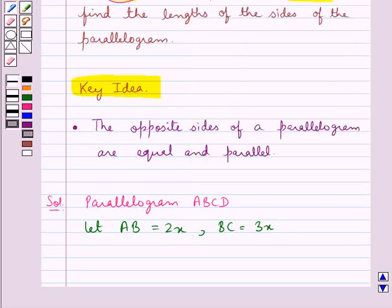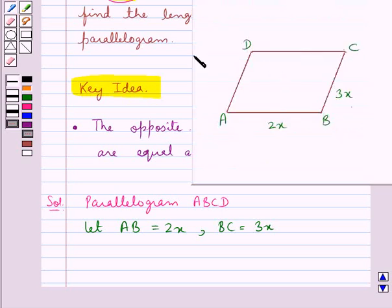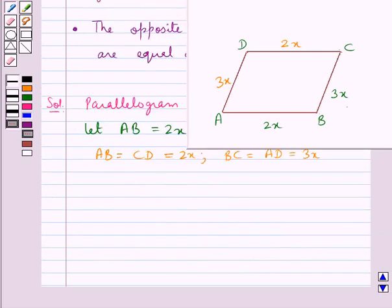Now since the opposite sides of a parallelogram are equal and parallel, so CD would be also equal to 2x and AD would be equal to 3x. That is we have AB is equal to CD and so it is equal to 2x. Then BC is equal to AD which is equal to 3x.